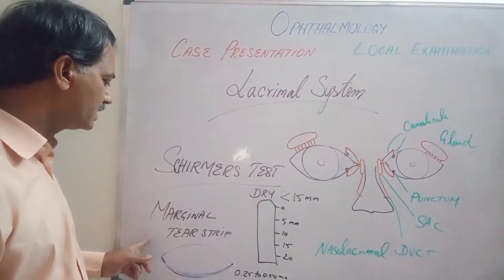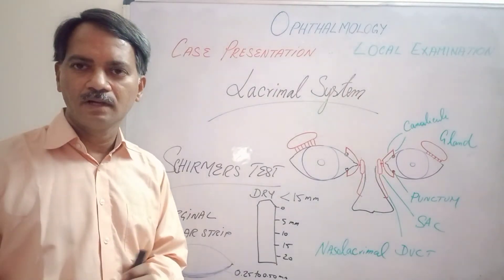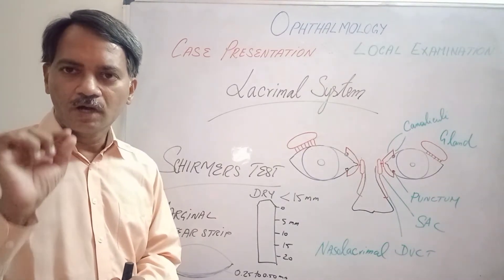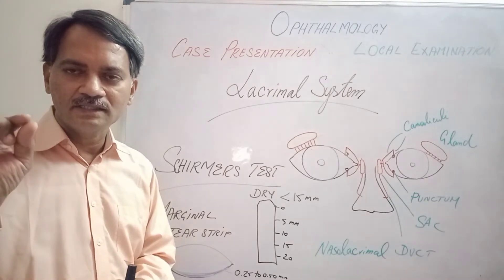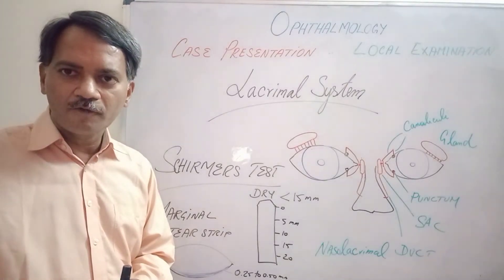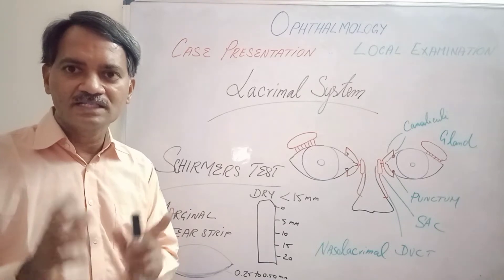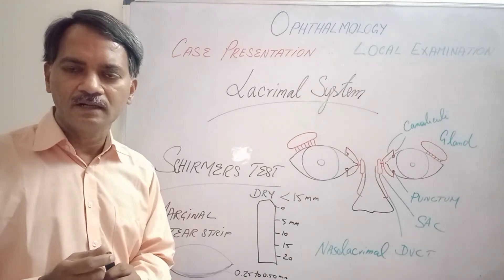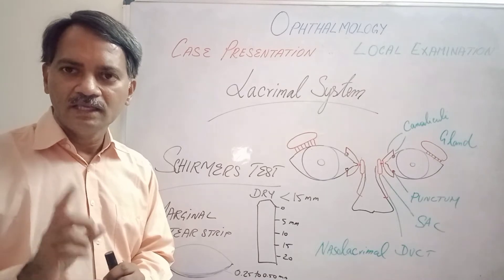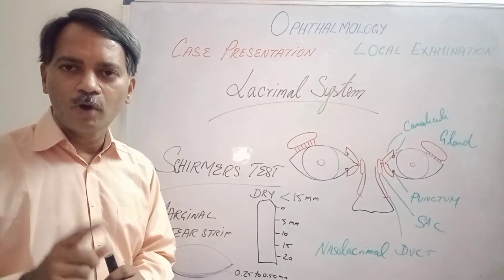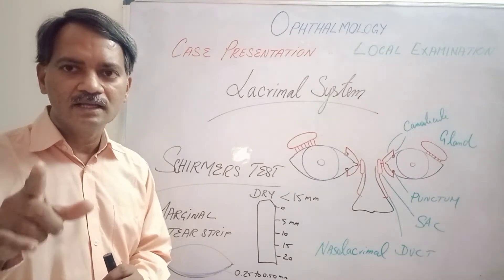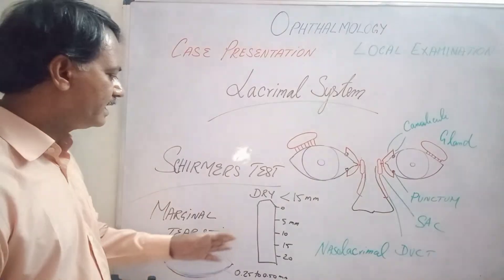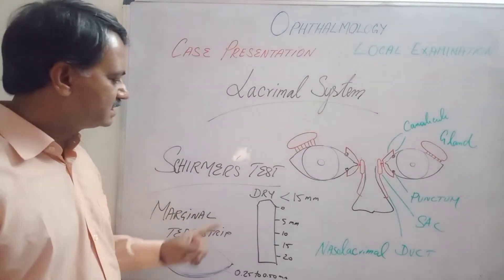Two simple tests are used. The first is the marginal tear strip. We observe the position where the lower lid margin touches the conjunctiva and look for a meniscus of tear fluid, clearly seen with the slit lamp. Normally this meniscus is between 0.25 mm and 0.5 mm in thickness. If it is less than 0.25 mm, it indicates decreased tear fluid secretion and dryness.